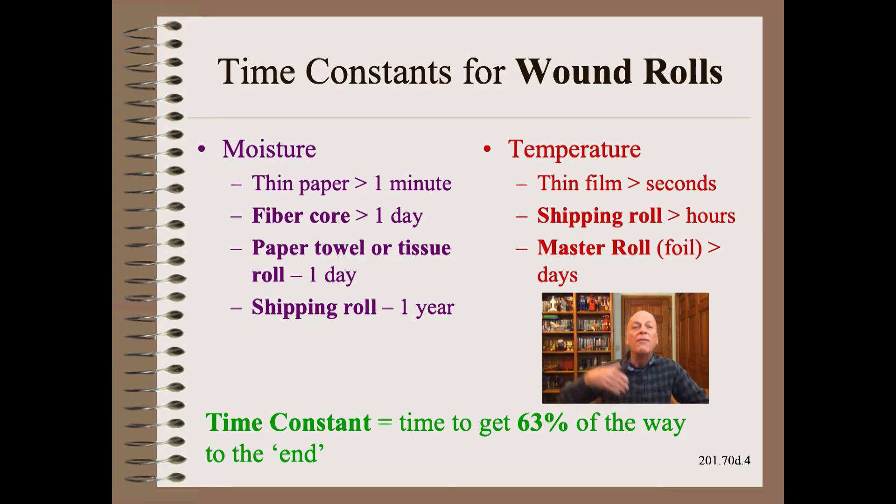At the far extreme, a master roll of metal foil, say two meters in diameter by two meters wide, may take days or even a couple of weeks to cool. One time constant.